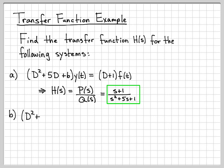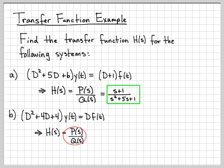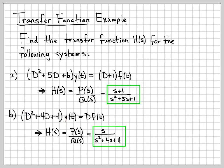Part b — different system, same strategy. Here is my differential equation that describes how the input and output are related to each other. I want to find the transfer function, which is just a ratio of these two polynomials in s. By inspection, the numerator is s squared plus 4s plus 4 — just replace all the d's with s's. So this is the transfer function for my second system.